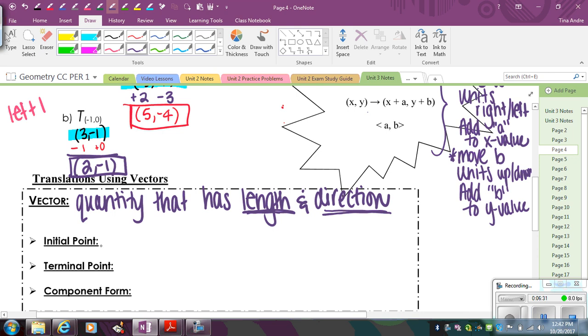So a vector has what's called an initial point, which is where you start, and then a terminal point, which is where you end. So that's how you would be able to find the direction and the length. So you would look from the starting point to the end point, there would be an arrow indicating which direction you're going, and then the length is going to be how far you go.